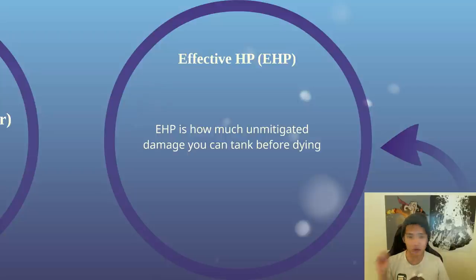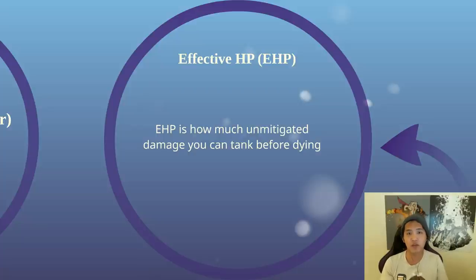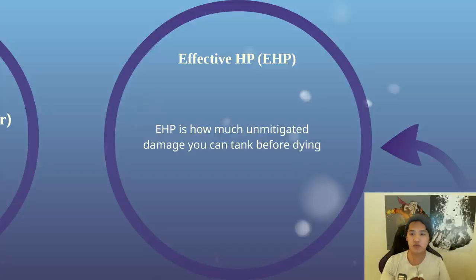If you're Zeus and you're throwing lightning bolts around, and the tooltip for Lightning Bolt states 350 damage at level 4, that's how much damage you do before magic resistance and Anti-Mage's spell shield and whatnot. Simply put, it's just tooltip damage.